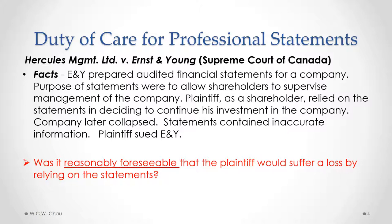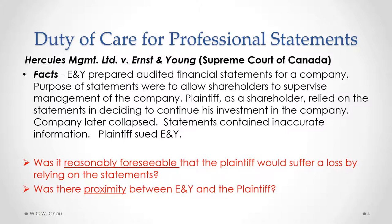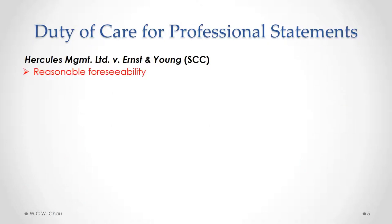And the second question was, was there proximity between E&Y and the plaintiff? In determining reasonable foreseeability, the Supreme Court gave some very specific guidance on what to look for to determine whether or not there was reasonable foreseeability. It said that it is more likely to be reasonably foreseeable if the defendant claimed some kind of special knowledge,